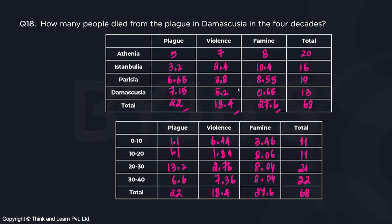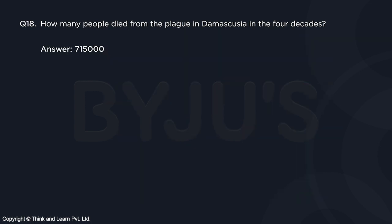Question 18: How many people died from plague in Damascus in the four decades? From the city-wise table, Damascus had 7.15 lakh plague deaths. Since it's a TITA question, the answer is 715 followed by three zeros — 715,000.